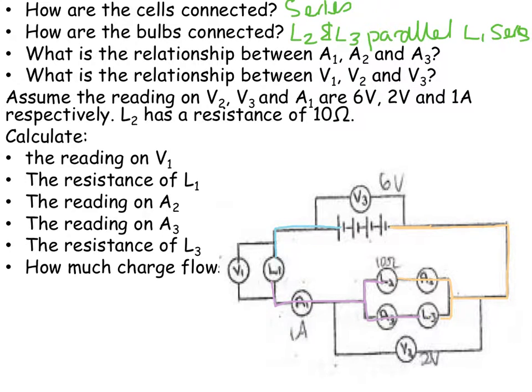What is the relationship between A1, A2 and A3? Well, let's look where they are. A1 is on the main branch, A2 and A3 are on the side branches, so A2 plus A3 would be equal to A1.